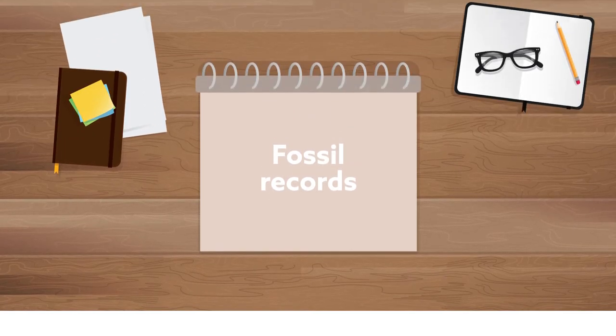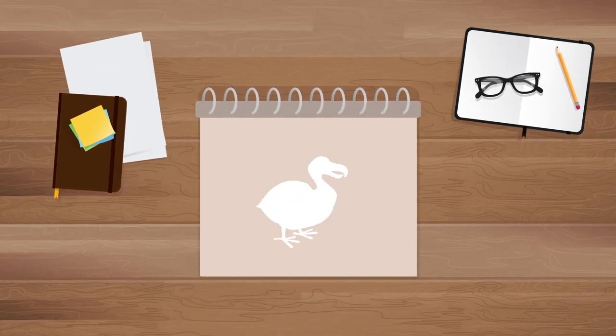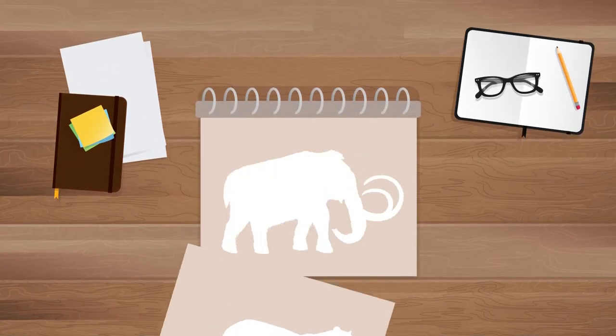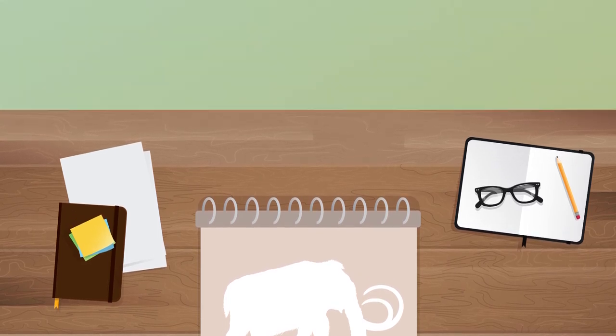A look through fossil records reveals countless species that have succumbed to this rule of nature. The rise and fall of species can be analyzed based on the number of individuals of various species that exist on Earth.